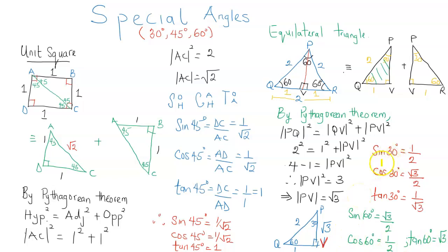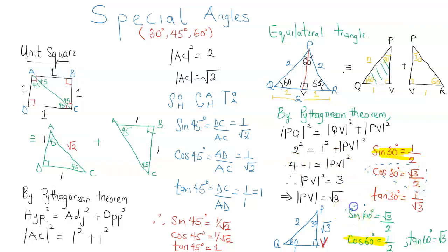We can see that sin 30 degrees equals cos 60 degrees, which is one half. Also, cos 30 degrees has the same value as sin 60 degrees, which is root three over two. And finally, tan 30 degrees is the multiplicative inverse of tan 60 degrees.